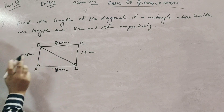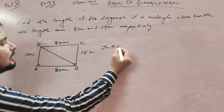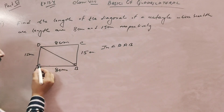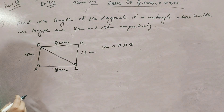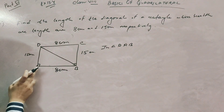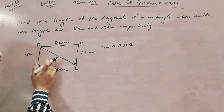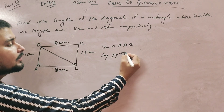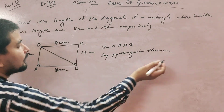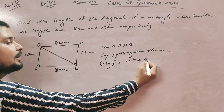Find the length of diagonal DB. In triangle DAB, there is a 90-degree angle because each angle of the rectangle is 90 degrees, and a triangle is formed here. We know that in a right-angle triangle, the side opposite to 90 degrees is called the hypotenuse, by the Pythagoras theorem. So hypotenuse squared equals height squared plus base squared.